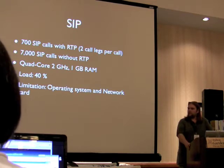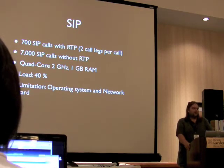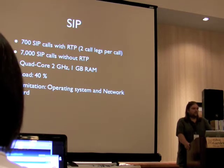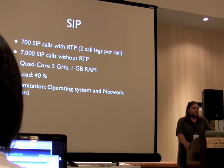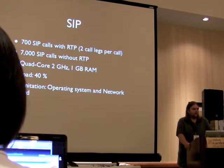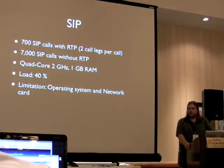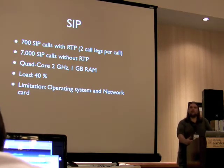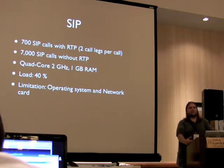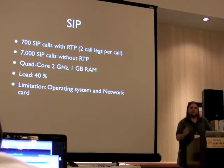Without RTP it's going to be 7000 connections, and that was tested on a quad-core 2 GHz with just one gig of RAM, and the load was never more than 40%. So we're having problems with the limitations of the operating system and the network — it's not the limitations of the gateway itself, which is just incredible.